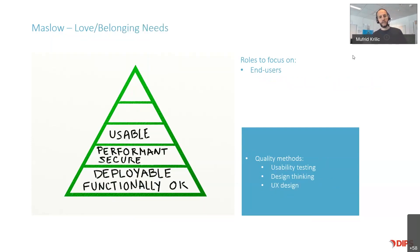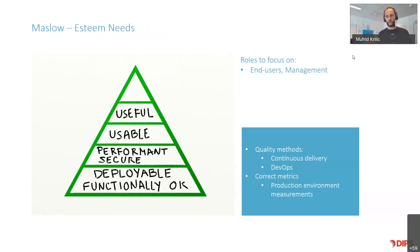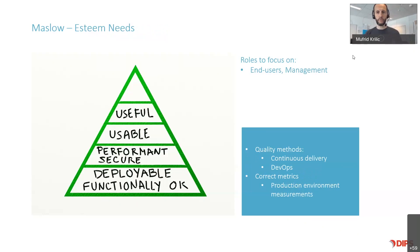The next level is usability — is the software actually possible to use in production? You do usability testing and apply design thinking, and you have to cooperate with the end users to verify it. Now, according to Goiko's model, corporate environments have traditionally invested in those three levels and stopped there. However, there are two more levels to discuss. The first one is 'useful.' So even though the software is usable, is it useful? Does it provide any value-added features for anybody at your customers? You try to deliver software as often as you can, and you monitor metrics in your production environment to verify it, cooperating with end users and perhaps management at your customers.